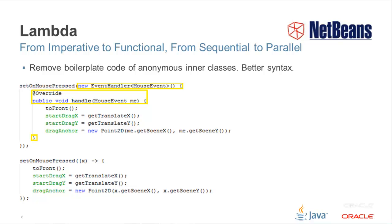The idea behind lambdas is quite simple. Most of the code in anonymous inner classes, where those classes are functional — such as in the case of the JavaFX event handler — is really superfluous. Since the compiler knows that the setOnMousePressed method can only accept an event handler, our client code should not need to specify that. And since the event handler is functional, having only one method to be implemented, there should be no need for client code to name that method explicitly. Instead, in Java 8, you can remove all that boilerplate code and replace it with a lambda expression.